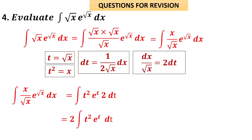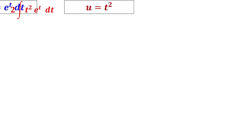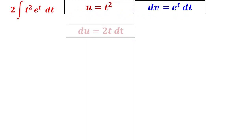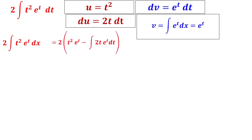Take u = t², dv = eᵗ dt, du = 2t dt, v = eᵗ. Applying the formula in uv − integral v·du form: t²·eᵗ − integral of 2t·eᵗ dt. Expanding: 2t²·eᵗ − 4 times integral of t·eᵗ dt. We must apply integration by parts again.